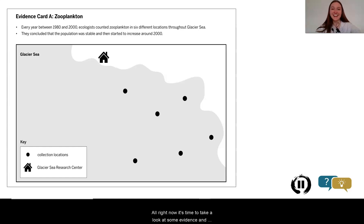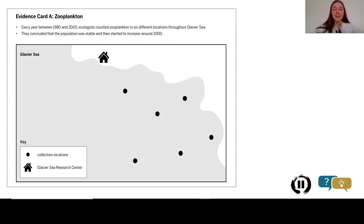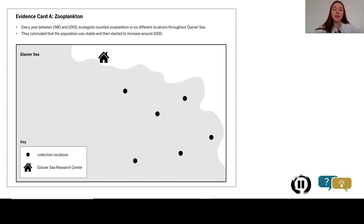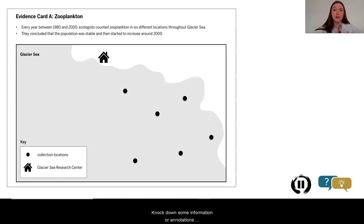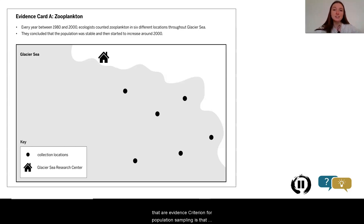Now it's time to take a look at some evidence and put all our understanding and learning to work. We have three pieces of evidence about the zooplankton populations and the sea turtle populations. I would encourage you to pause the video on each evidence card, jot down some information or annotations about what you're seeing. Does it seem like a reliable piece of evidence?